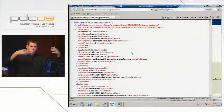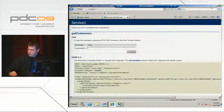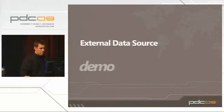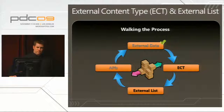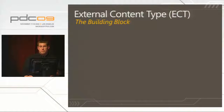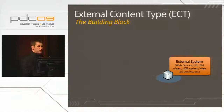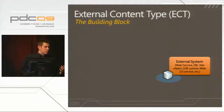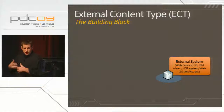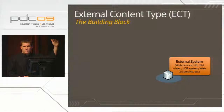We have a working service actually interacting with a back-end data source. The extrapolation is that you may build a similar web service, but your back-end data source may be different. Now we want to build the external content type. You can think of the ECT as the building block — this is where we build the schema, the evolved application definition file. Remember hand-coding the application definition files in 2007? Or using the Business Data Catalog definition editor from the SDK? You'll do something similar here, except you use SharePoint Designer or VS 2010.